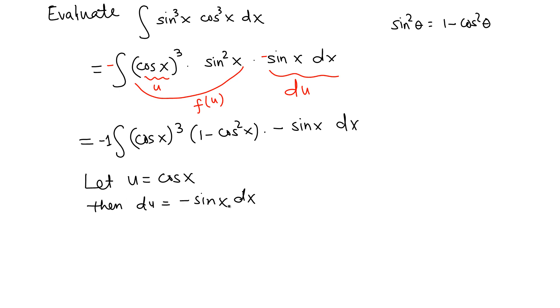So negative sine x dx is du, and this is u cubed times quantity 1 minus u squared. With this substitution, the integral becomes negative u cubed times 1 minus u squared du.